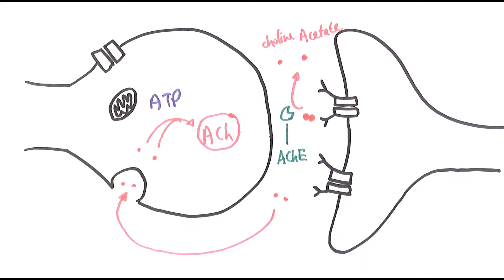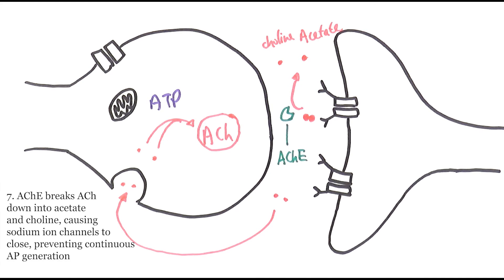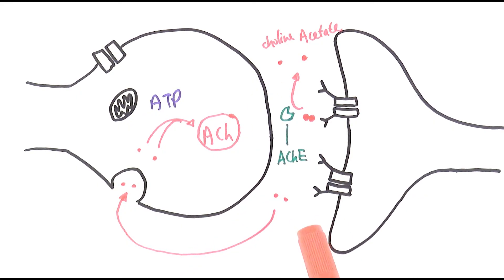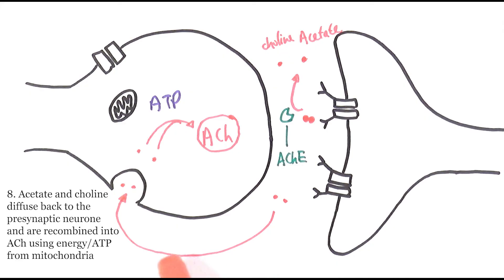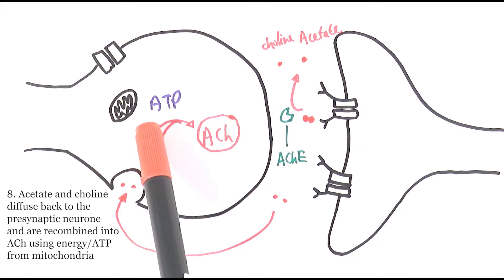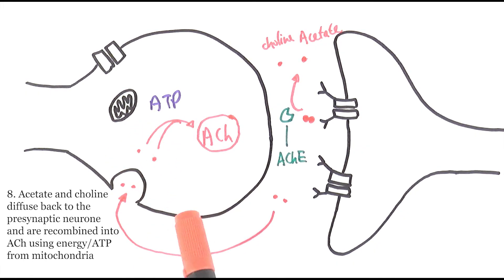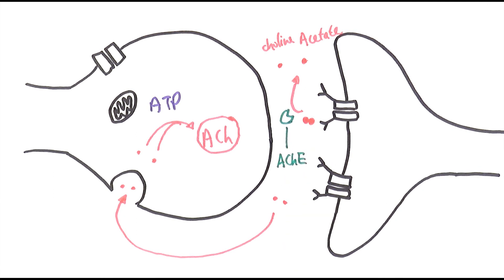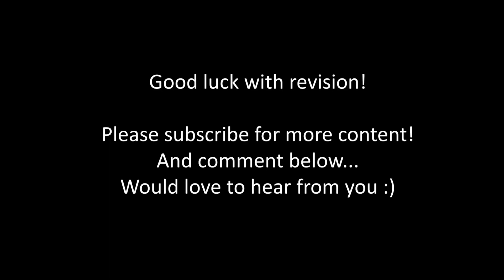In summary, to stop the nerve impulse from being continuously generated at the post-synaptic neuron, the enzyme acetylcholinesterase breaks acetylcholine down into acetate and choline. These diffuse back to the pre-synaptic neuron, where mitochondria provide ATP to recombine them into acetylcholine, essentially recycling it. With no more acetylcholine present, no new action potential can be generated, and that is the end of that transmission.